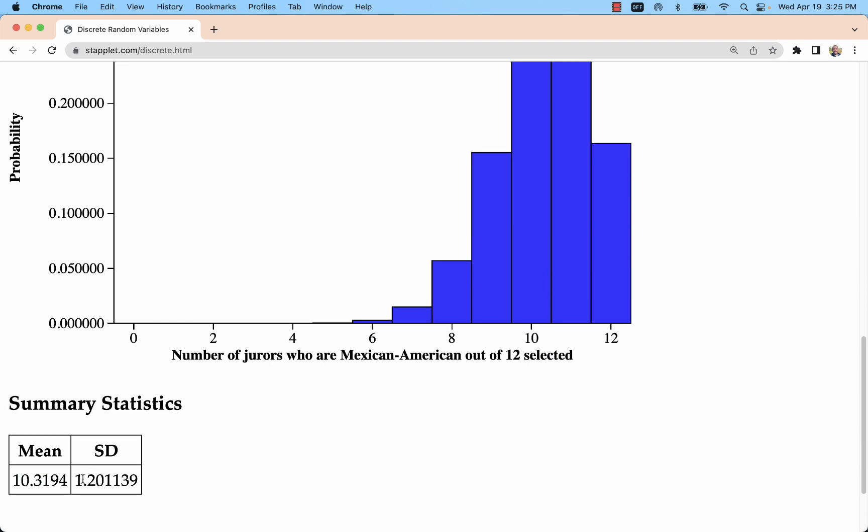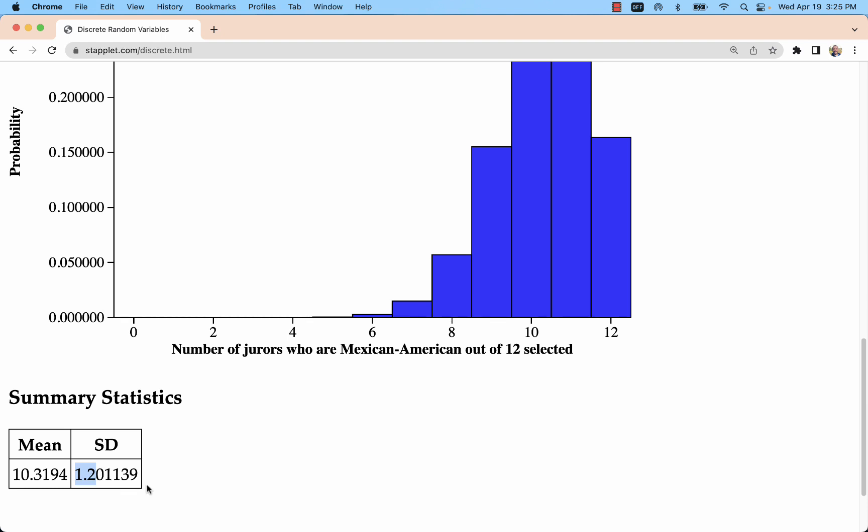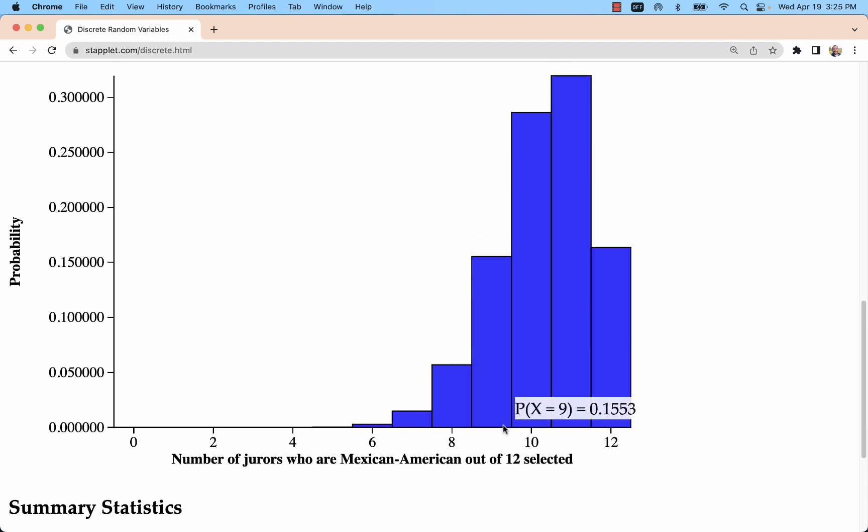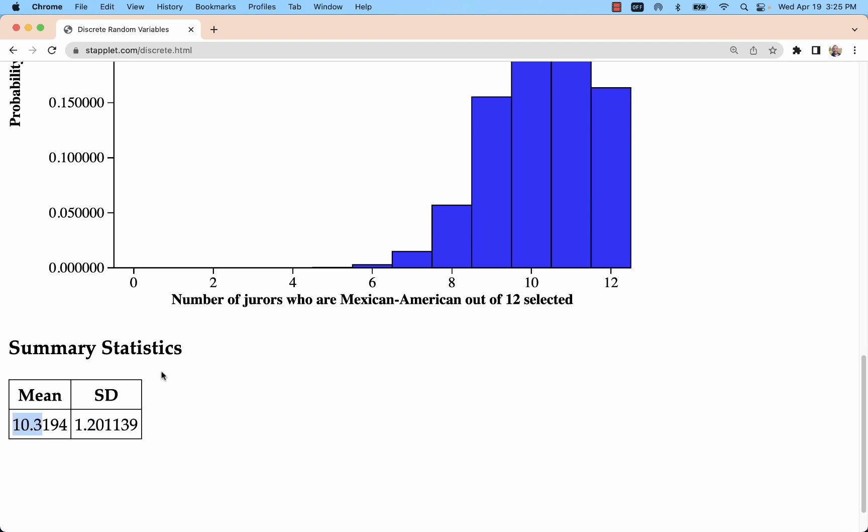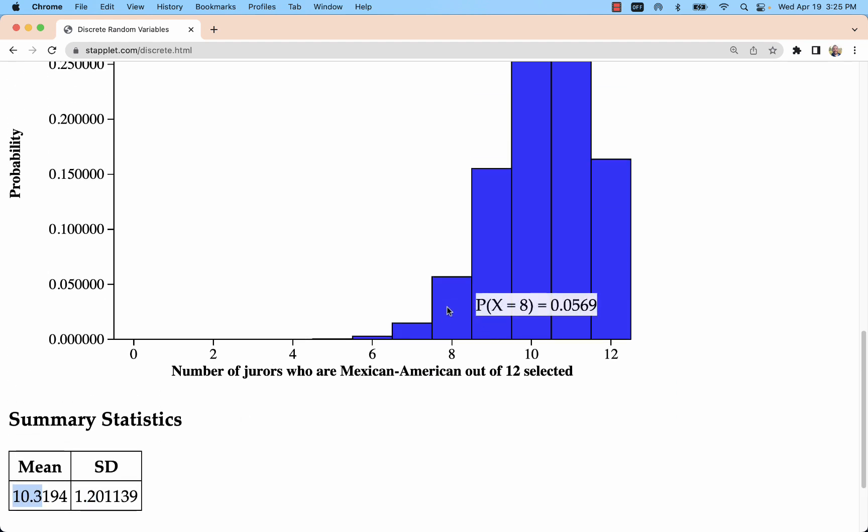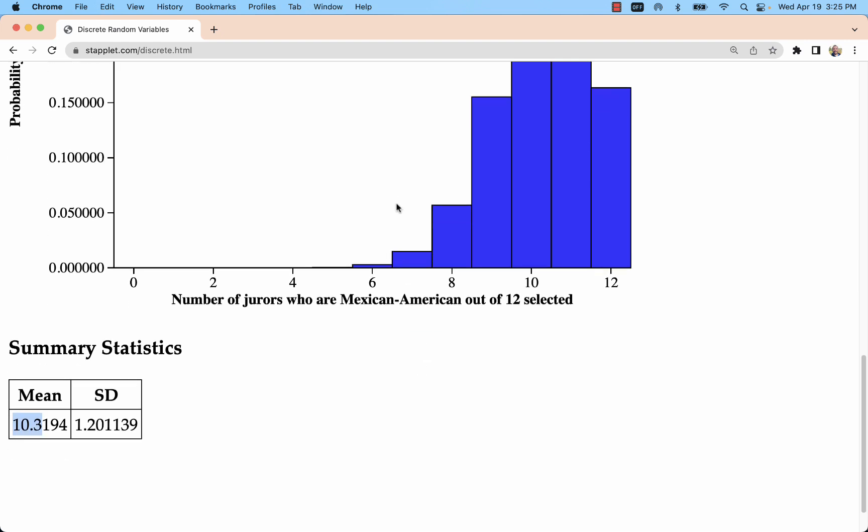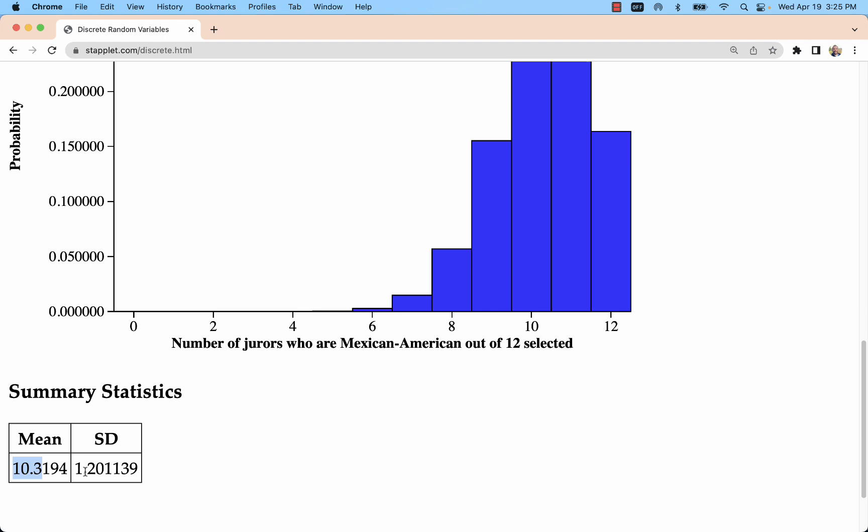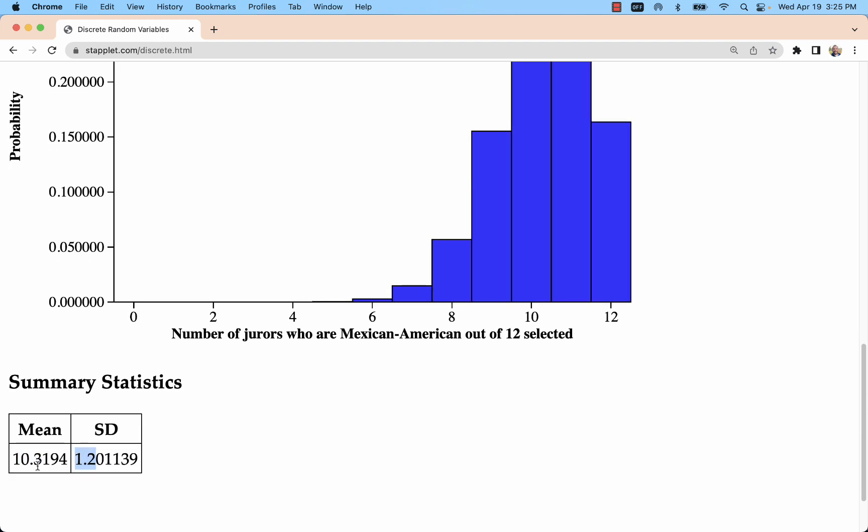What we would use the standard deviation for is to determine kind of a range of values of what we would usually expect from this data set. We're going to have some deviation from that mean because of sampling. So we are going to see samples with only 8 or 7 jurors who are Mexican-American. We're going to see those happen. This one's 5.69% of the time. This one's 1.48% of the time. The question is, where do we draw the line for what starts to seem like it's really just way out of the ordinary.